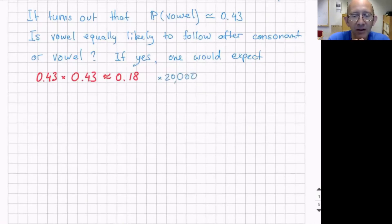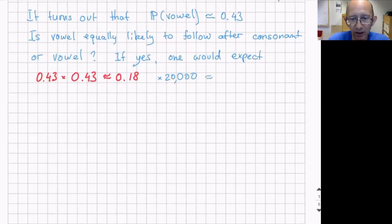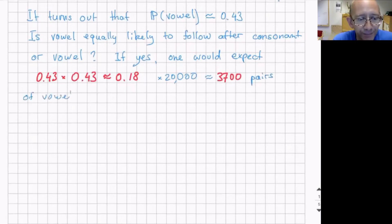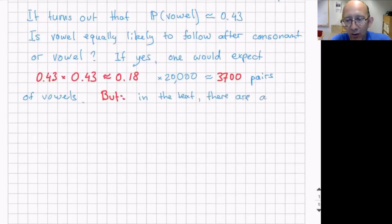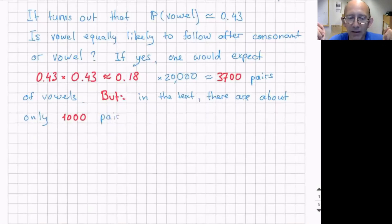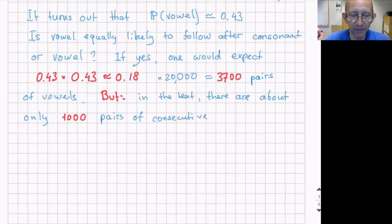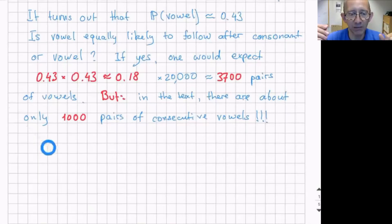So two consecutive vowels. Given that there are 200,000 letters, you should expect something on the order of 30,000 something pairs of vowels. But if you look in the text and count the number of pairs, you will find that there are approximately only 10,000 pairs of vowels — about three times less than one would expect if the vowels came as independent, identically distributed Bernoulli random variables.